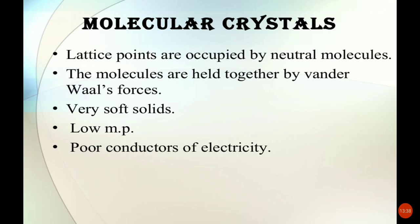Polar molecular solids contain molecules with polar covalent bonds, held together by dipole-dipole interactions. Examples include SO2 and NH3. They are also soft and non-conductors of electricity. Hydrogen-bonded molecular solids have molecules held together by strong hydrogen bonds; an example is H2O.